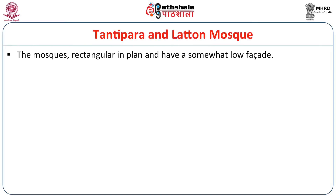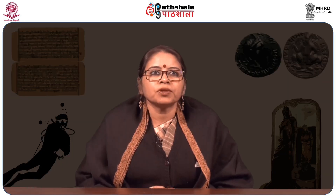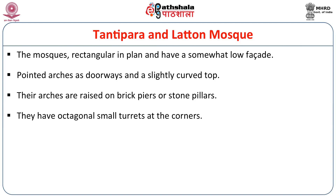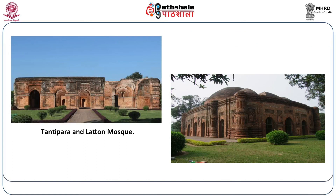The mosques which are rectangular in plan and have multiple domes have somewhat low facades. Pointed arches as doorways and a slightly curved top are very common features. Their arches are raised on brick piers or stone pillars with octagonal small turrets at the corners. These include mosques such as the Tatipara mosque, Chamkati mosque, Latan mosque, and Chika, among others. The entire structure of the Tatipara mosque is built of brick with profusely decorated terracotta ornamentation, though its domes have totally disappeared.